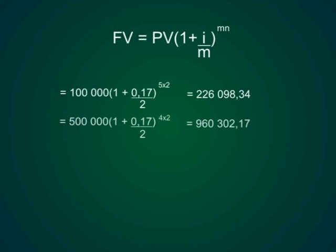Of the 500,000 Rand amount which he invests in a year's time it will be 500,000 Rand open bracket 1 plus 0.17 over 2 close bracket to the power 4 times 2 which gives us an answer of 960,302 Rand and 17 cents.